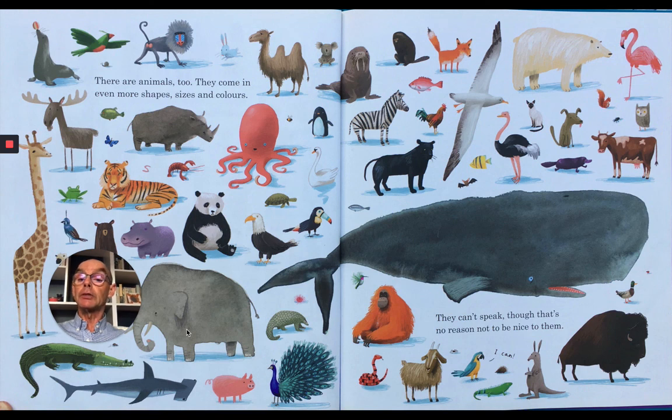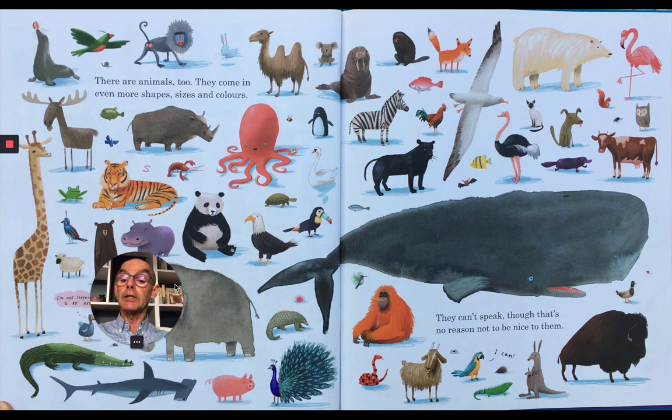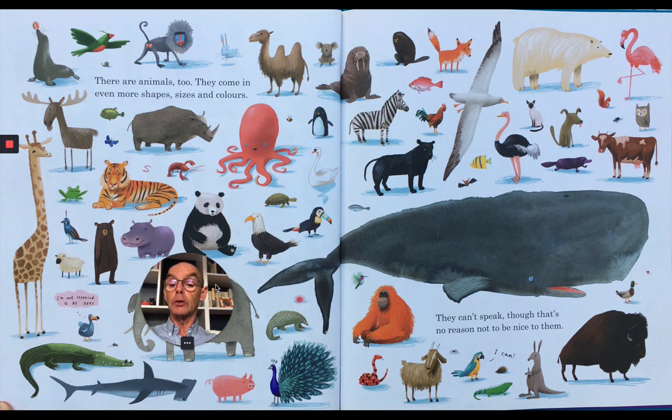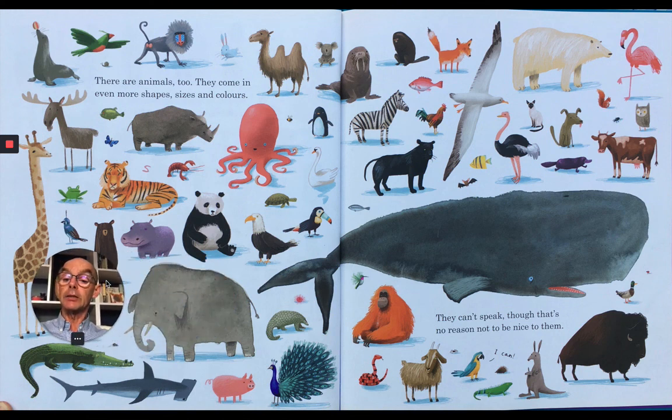There are animals too. They come in even more shapes, sizes and colours. You can see some are flying, some are from the sea, some are small, some are big. And there's even one here that says, I'm not supposed to be here. That's the dodo, because of course it's extinct. It doesn't live anymore.